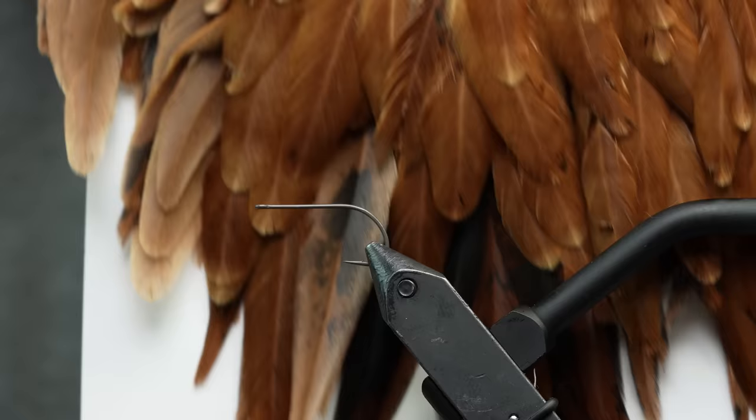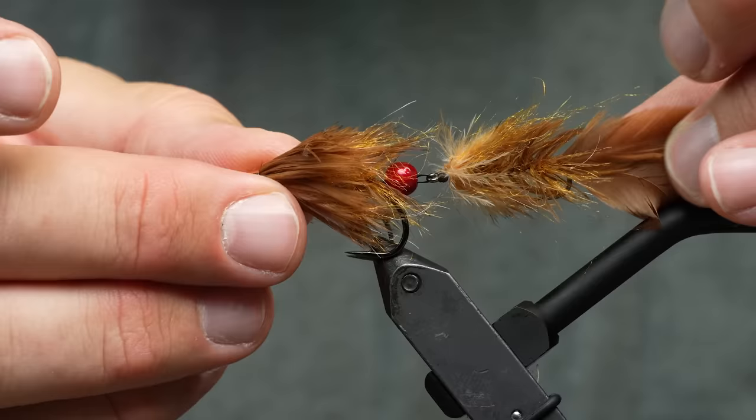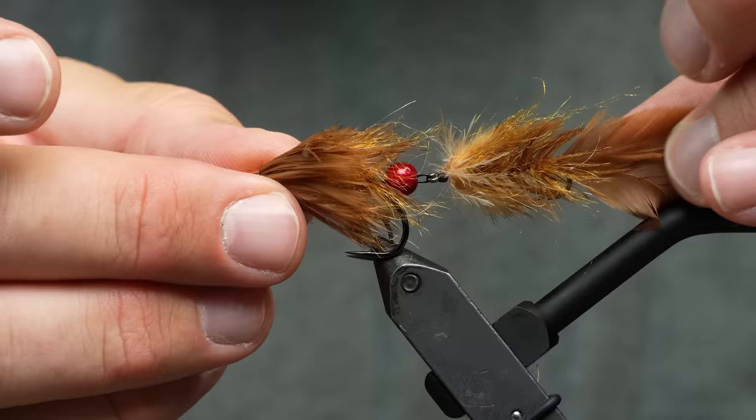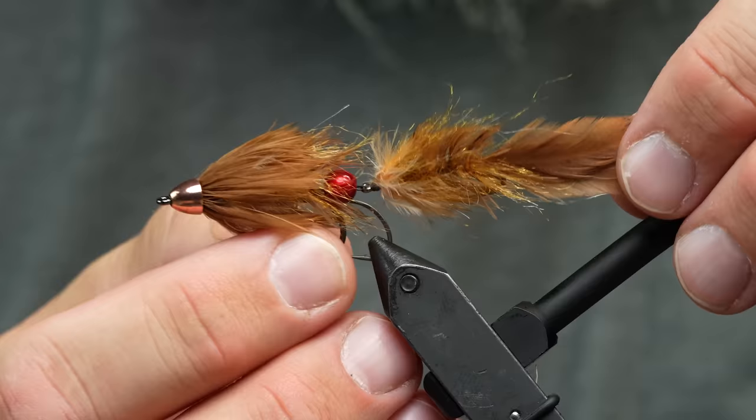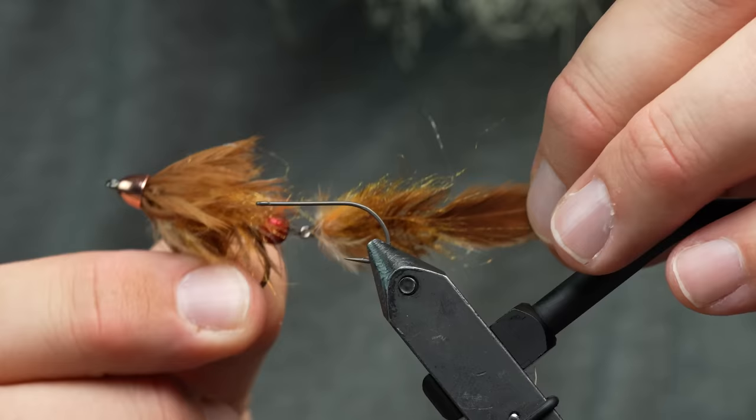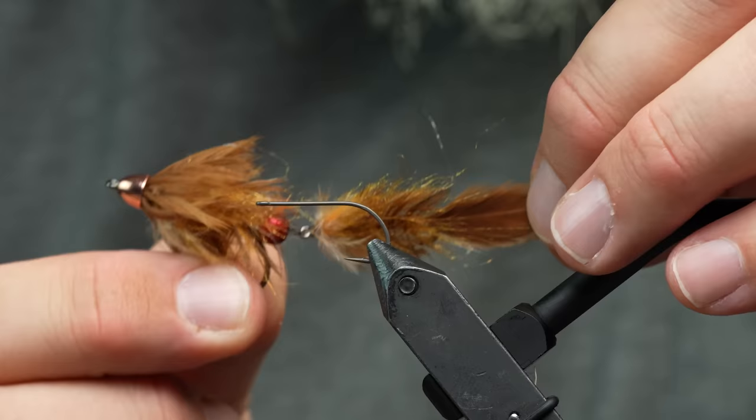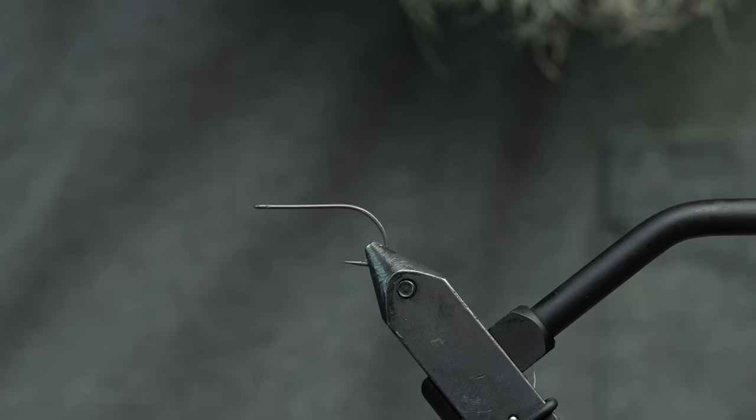Okay this is a cool fly that we're gonna tie mostly out of hen saddle. Hen saddles are great because they're super webby. People have asked us to hold up the fly that we're tying before we tie it. As you can see this has a kind of flat style tail which wiggles back and forth really well, a messy body and then also up at the head we add a few more pieces of schloppen. This is just called a hen bugger, an articulated hen bugger.